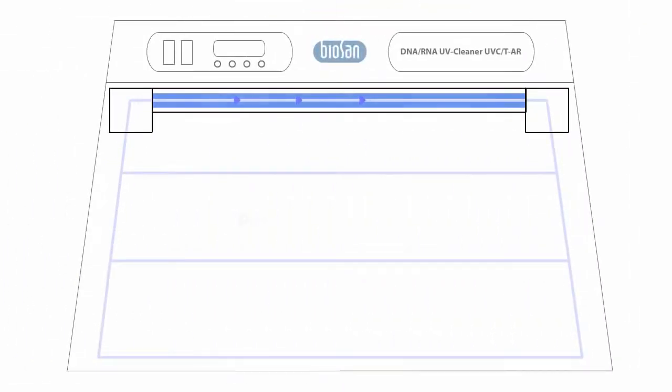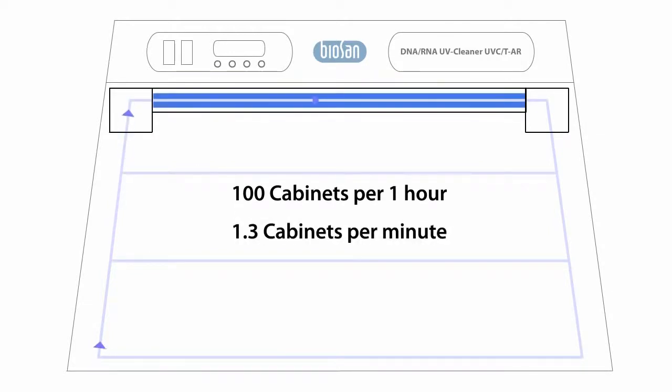With air flow productivity of 14 cubic meters per hour, the recirculator processes 100 cabinet volumes per hour, which is 1.3 cabinet volumes per minute.